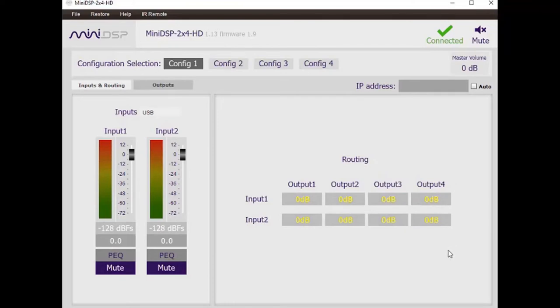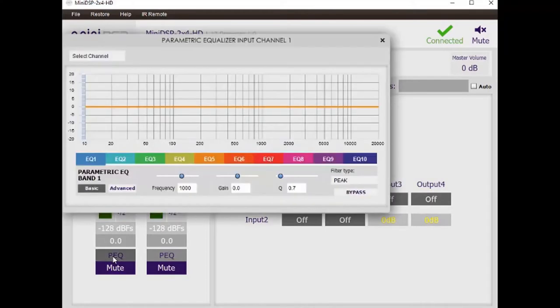From the input page, we can go to one of the two input side parametric equalizers. Each one of these equalizer banks has ten variable filters which are completely independently configurable. We'll start here on filter 6 by adding a peak filter at 1000 Hz and a Q of 0.7.